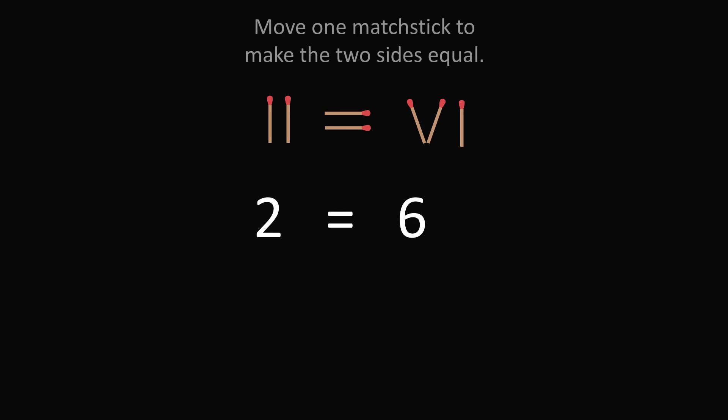Now, let's go to puzzle 6. We have matchsticks arranged in the following way. We have the Roman numeral 2 is equal to the Roman numeral 6. You need to move one matchstick to make the two sides equal. How do you do it?